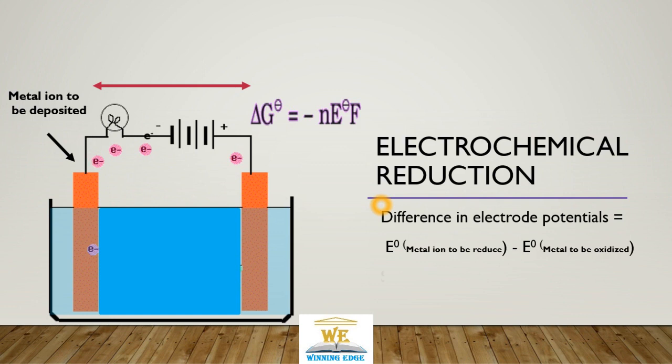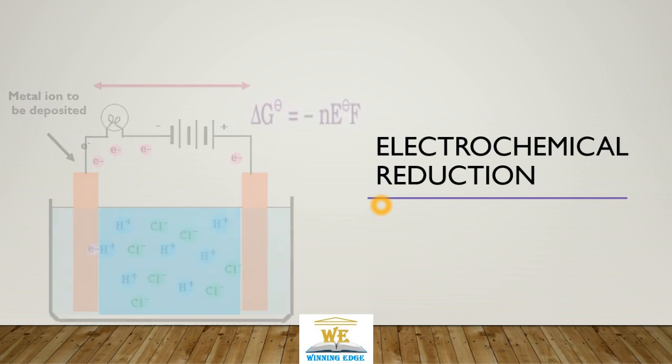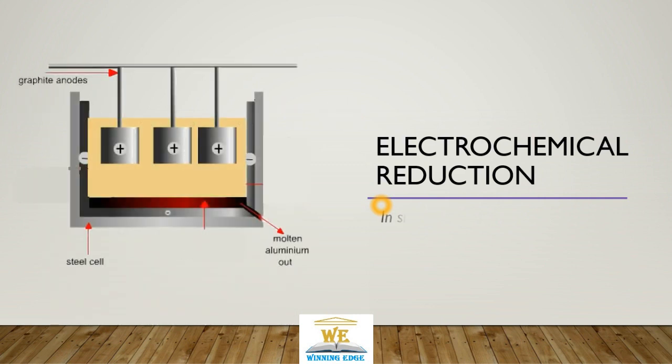So delta G will be equal to minus n times the standard electrode potential times Faraday's constant. In this simple electrolysis, ions are discharged on the cathode.